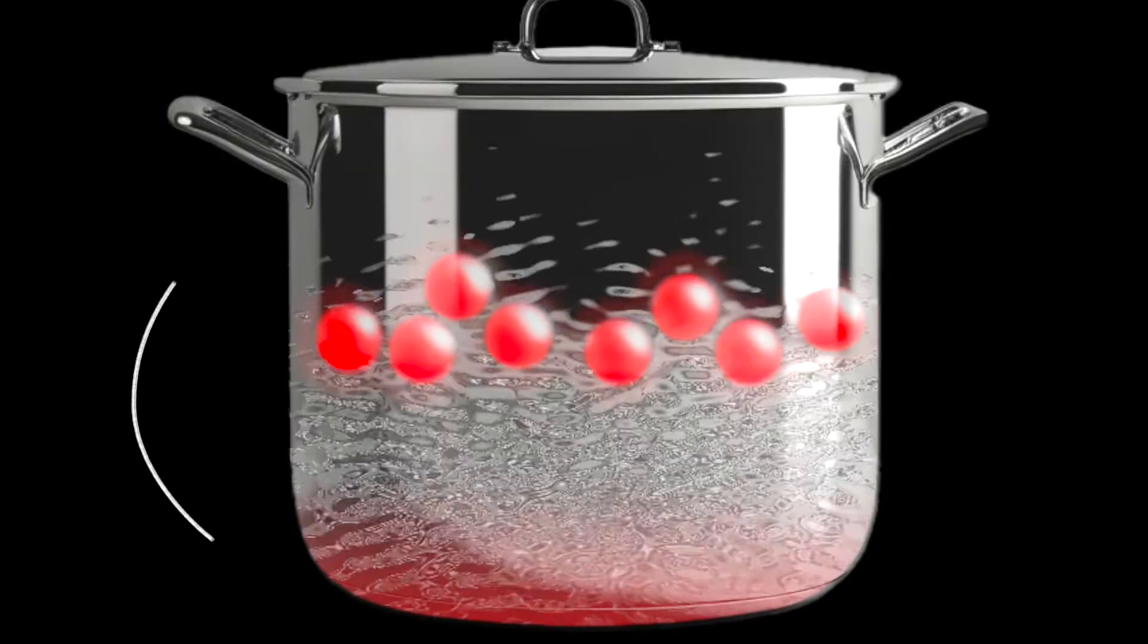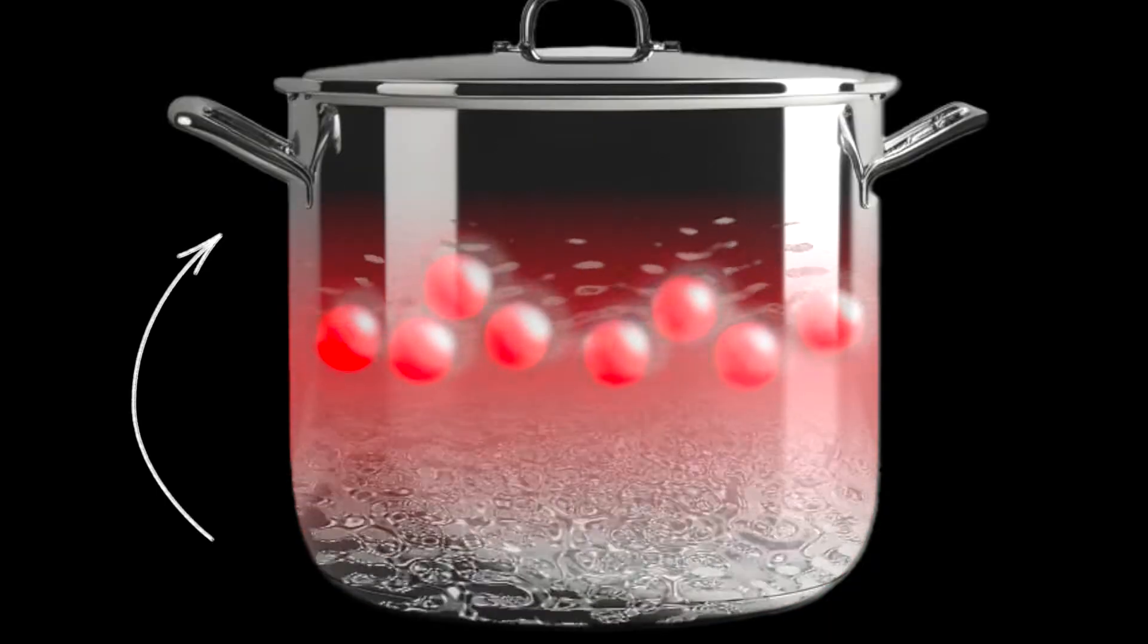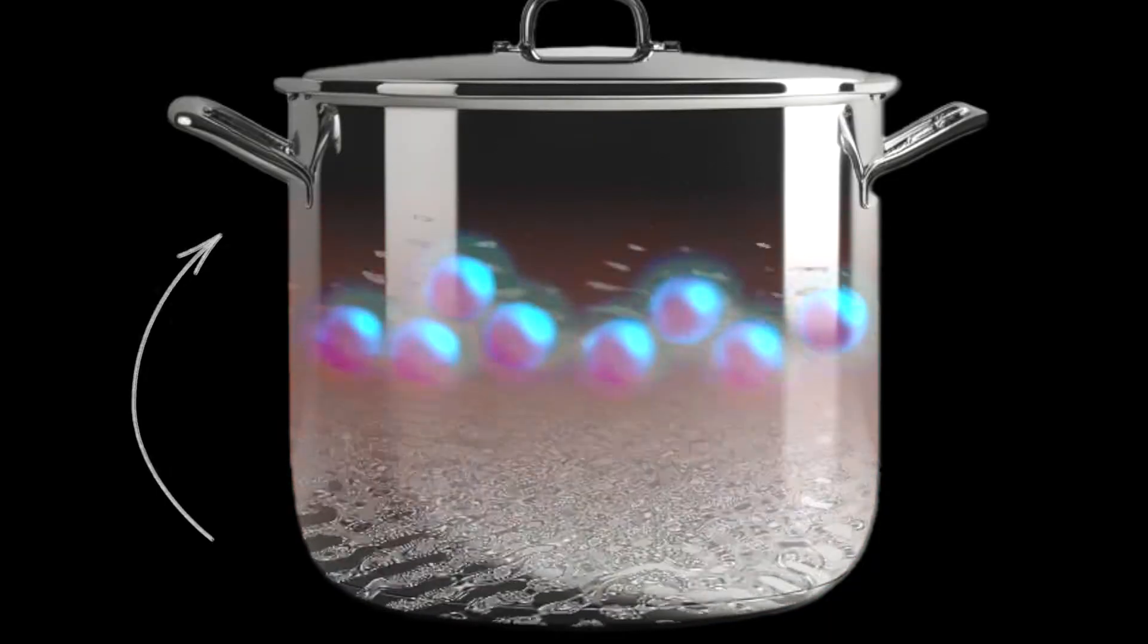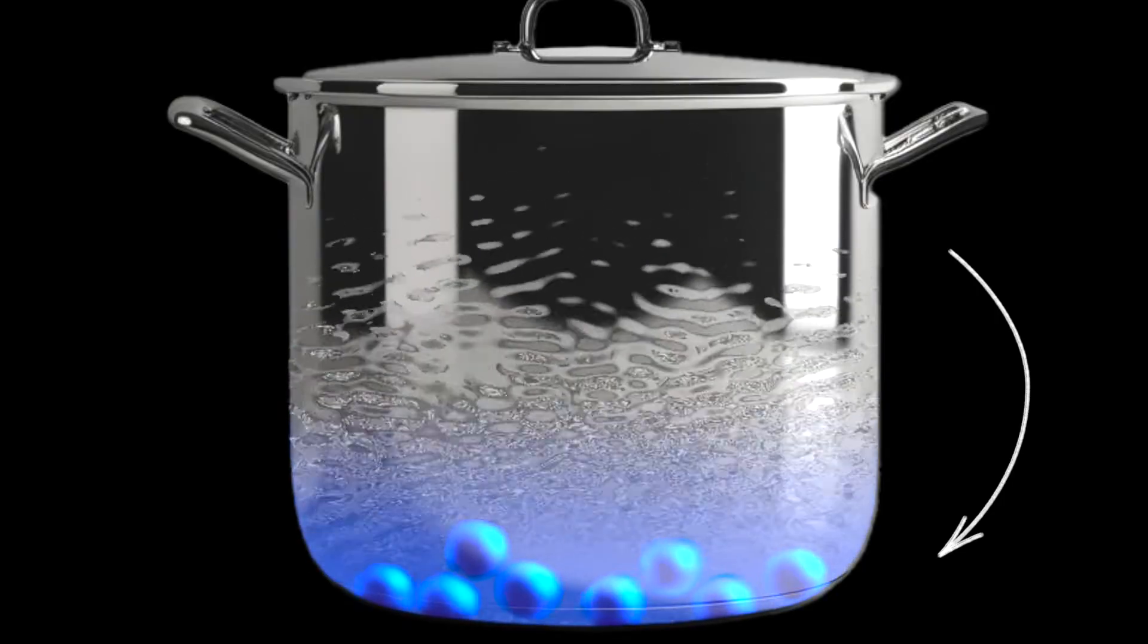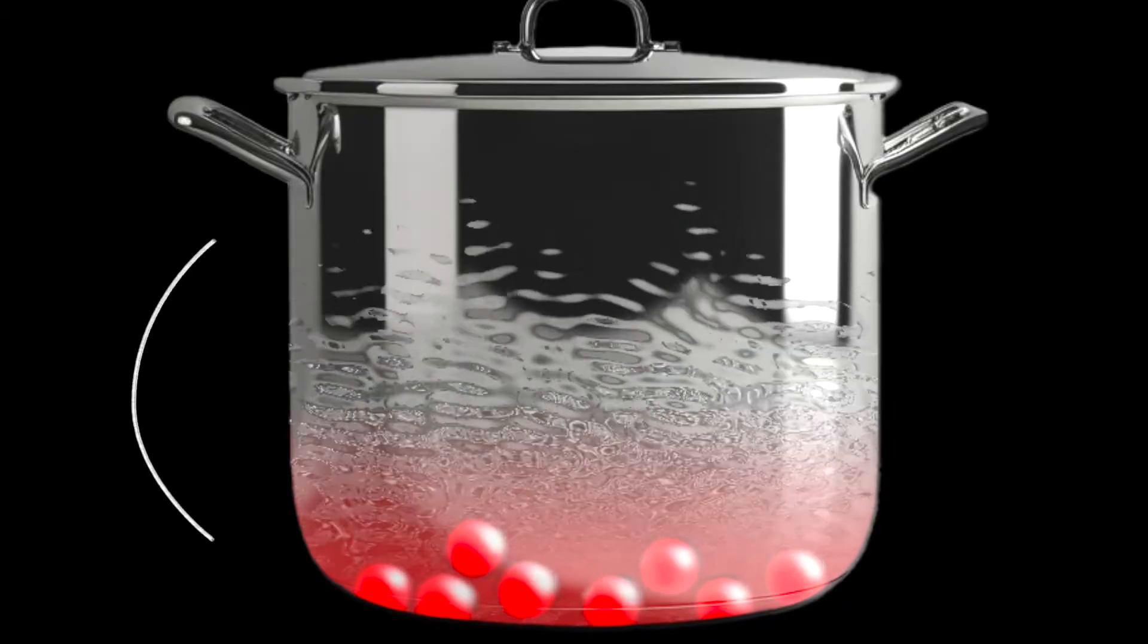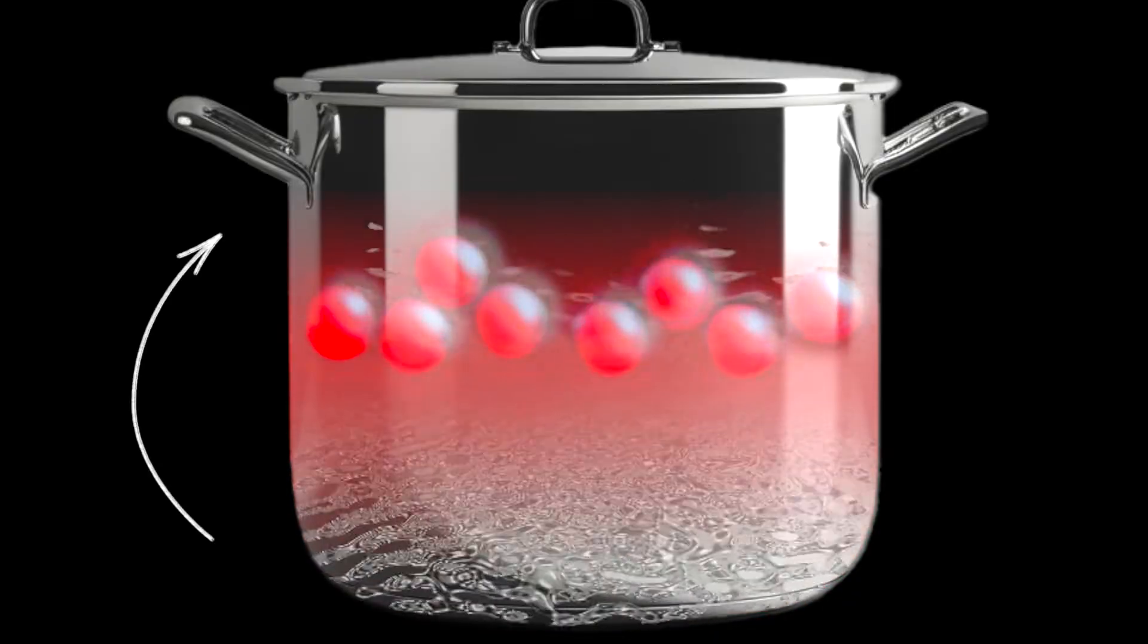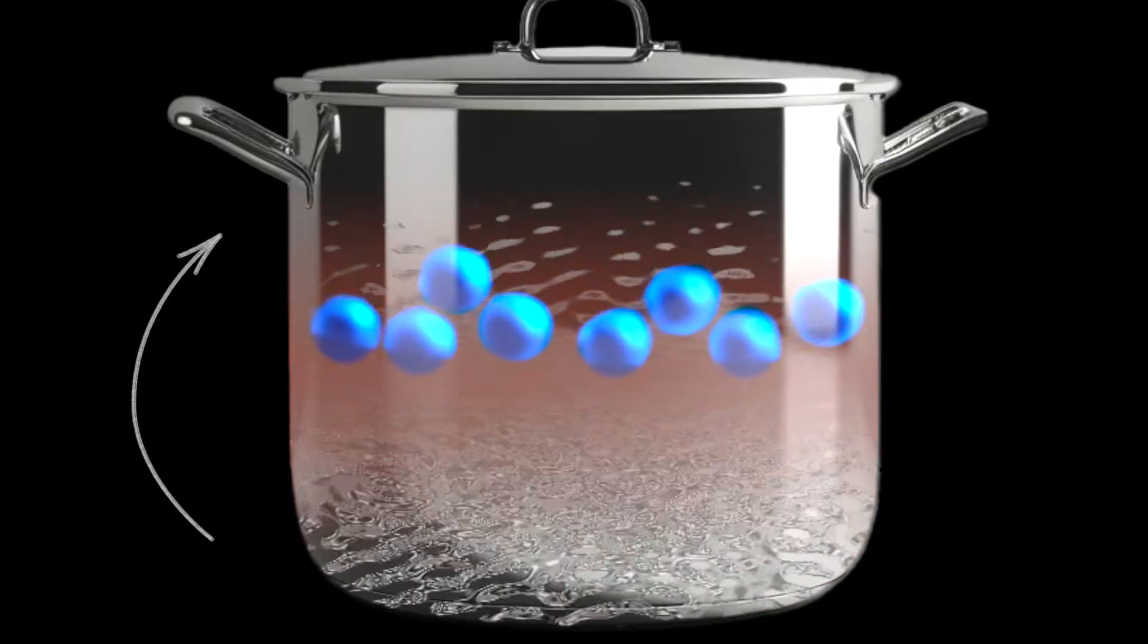The warmer, lighter fluid rises, and as it moves upward, it cools down, becoming denser and sinking again. This ongoing loop of rising and sinking particles creates what's known as a convection current, a continuous cycle that transfers heat throughout the fluid.